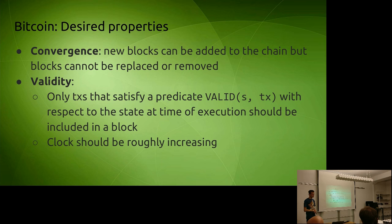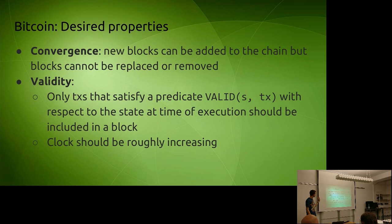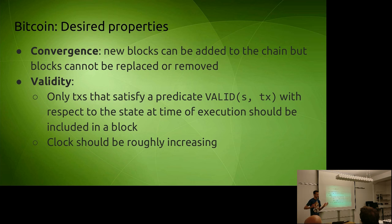Validity: we want the Bitcoin blockchain to be valid. Some definitions of validity are: you want proof of work to be valid, you want blocks to contain hashes of the previous block, you want links to be in the right format. An important one from the point of view of a currency is a validity predicate — only transactions that satisfy some validity predicate, depending on the transaction and the current state, should be included in the block. For example, if I have 100 Bitcoins and send 70 to Christian, that transaction is valid. If I then try to send another 70 Bitcoins, because the state changed, the second transaction fails. Also, the clock should be roughly increasing.